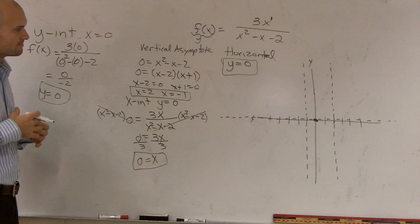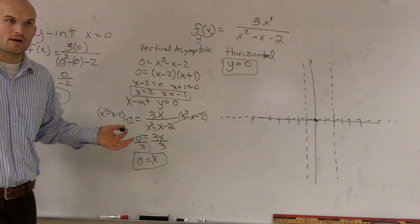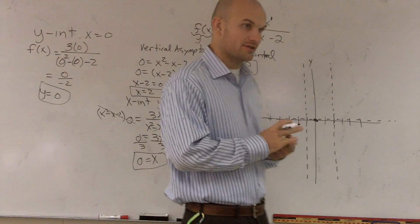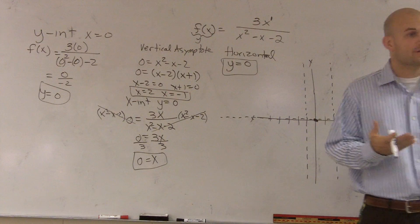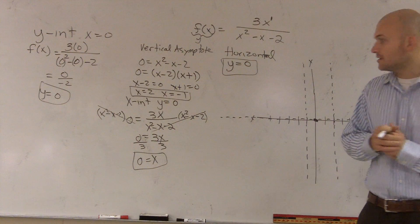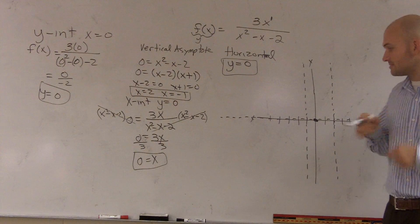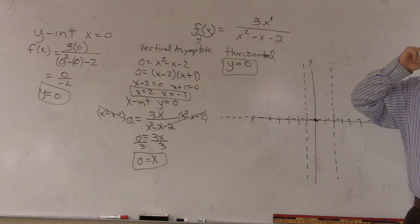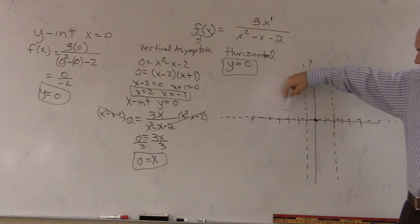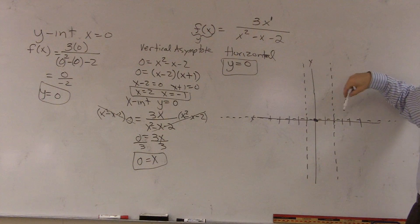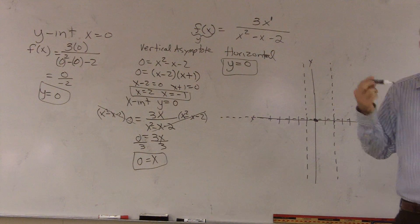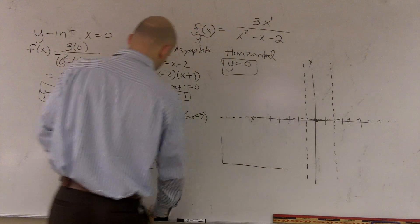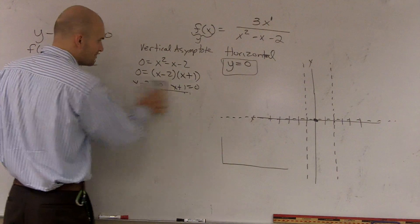Now we need to figure out points to plot. We need two points to the left of each vertical asymptote, two points in between them, and two points to the right — that's the absolute minimum. I'll pick x values: negative 3, negative 2, negative one half, 1, 3, and 4. I'll have students calculate each value. If you have a graphing calculator, you can use the table function; otherwise, you plug each x value directly into the function.